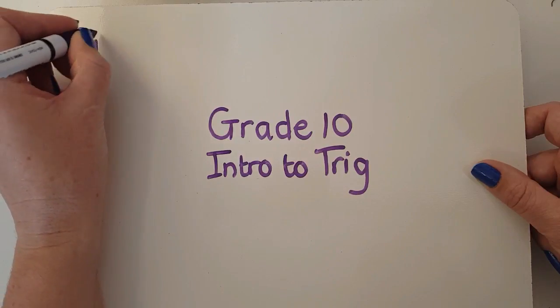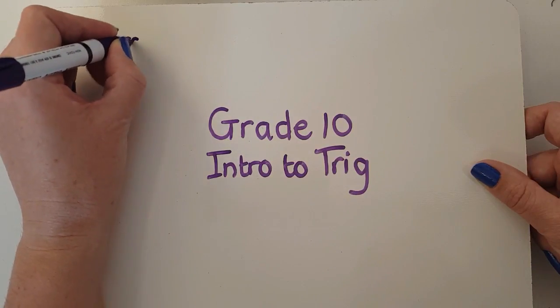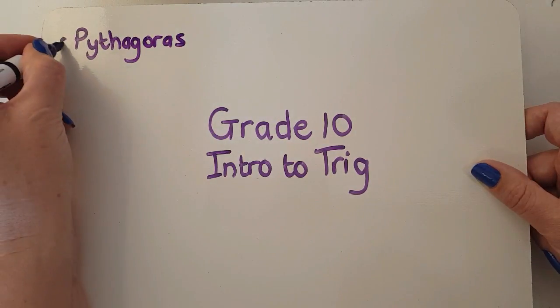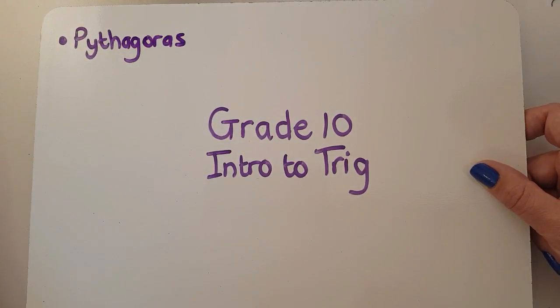You're going to need to use Pythagoras much more than you ever used it before. If you can't remember how to do Pythagoras with right angled triangles then you need to go and refresh that before you're able to do trig.